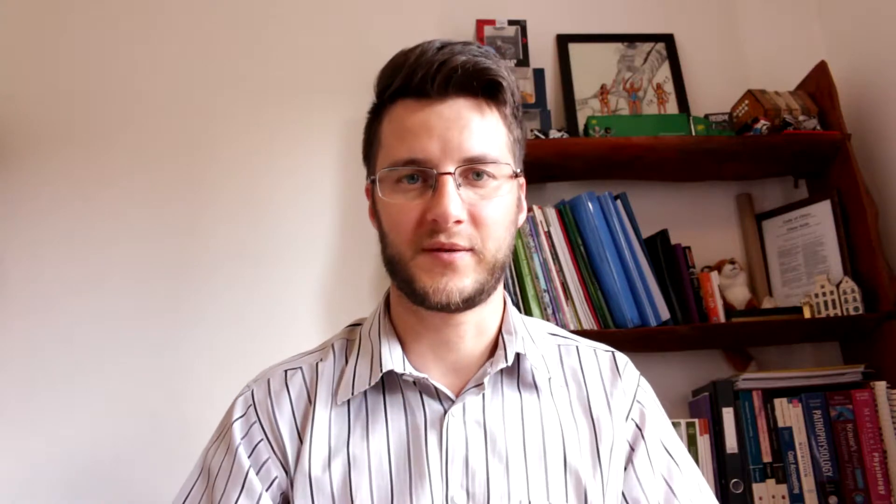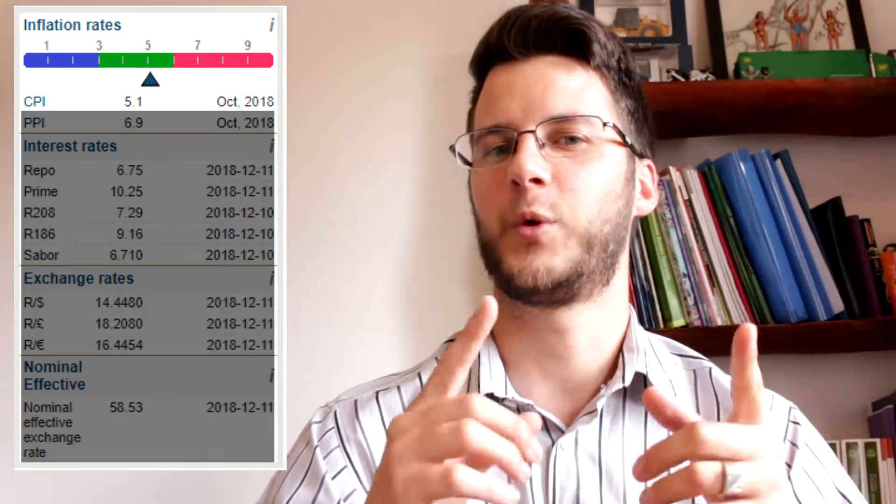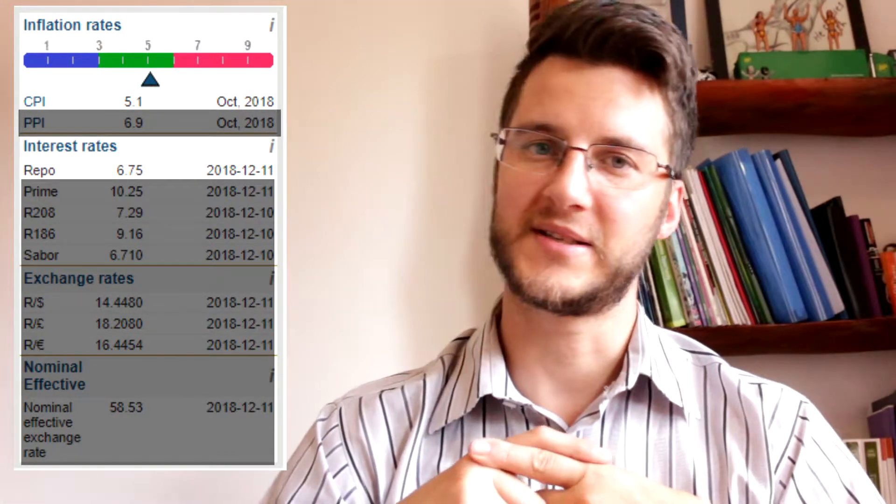The second source from where banks can get their money is the Reserve Bank. The Reserve Bank charges what is known as the repo rate. The definition of a repo rate is the rate at which the central bank lends money to commercial banks in the event of any shortfall of funds. The repo rate is used by monetary authorities to control inflation.